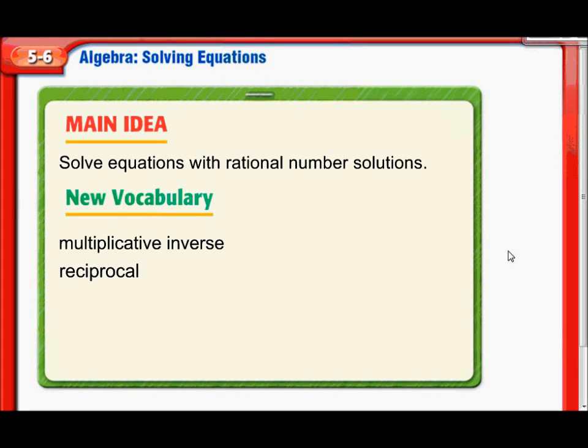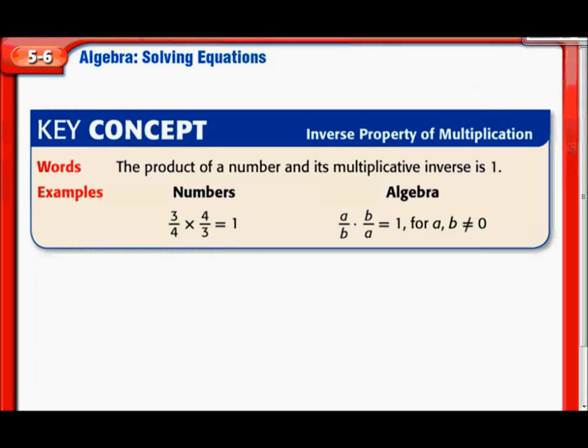You can see here that we're solving equations with rational number solutions. Two words we'll be defining are multiplicative inverse and reciprocal. So we start off here with the inverse property of multiplication. The product of a number and its multiplicative inverse is 1.